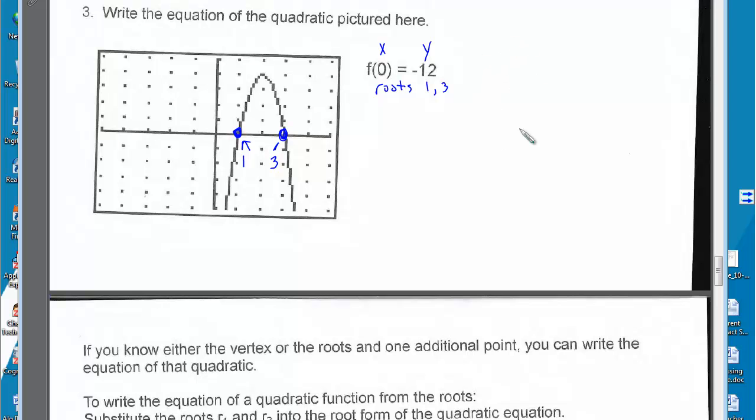So now we just plug in our equation. So y equals a times x minus root 1 times x minus root 2 on both sides. On the right-hand side, we basically have everything we need to have our equation, except we do not know what a is.